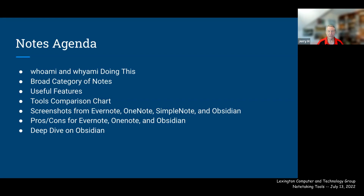I'll talk about notes in general — there are different types of notes and reasons we take them. Each person comes to a note application with different use cases and expectations. I do a breakdown of different note types, highlight useful features common across apps, and compare Evernote, OneNote, SimpleNote, Obsidian, and WorkFlowy. Then I go into pros and cons of Evernote, OneNote, and Obsidian, and deep dive into Obsidian's DIY features and power.